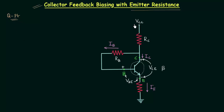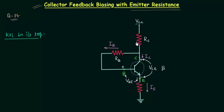I will apply KVL — Kirchhoff's voltage law — in the input loop to find out the expression of current IB. For this we will start from VCC and end at the ground. The potential of ground is equal to 0V.